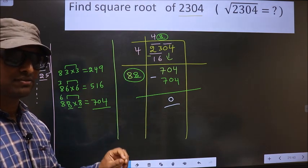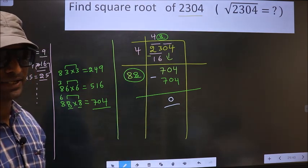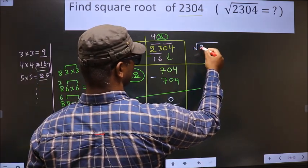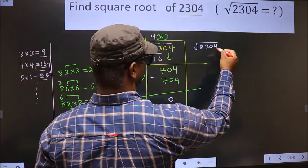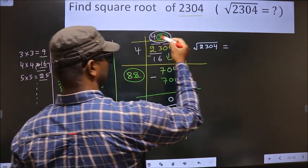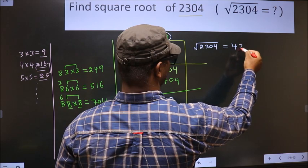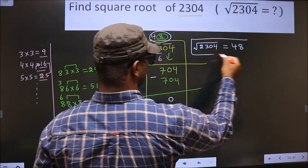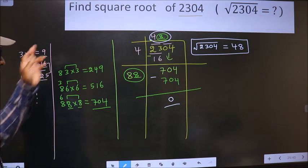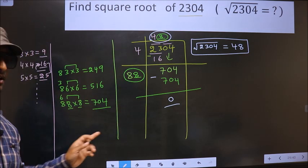That means given number is a perfect square. And the square root of 2304 is this number. That is 48. So this is our answer. Am I clear?